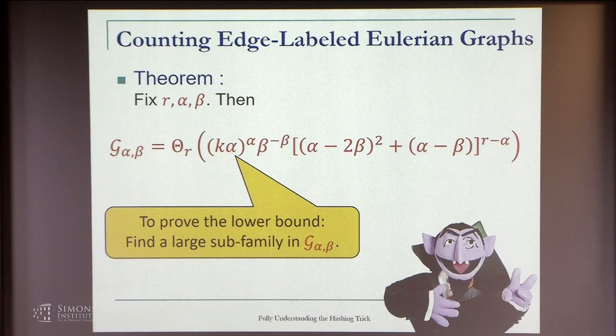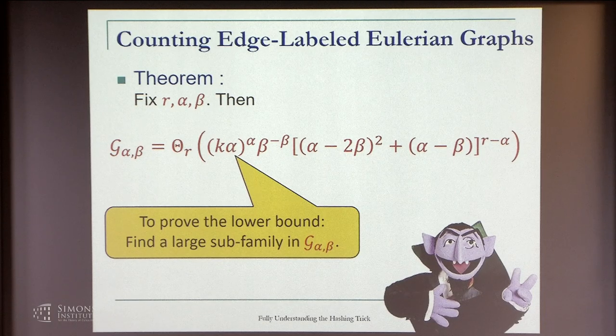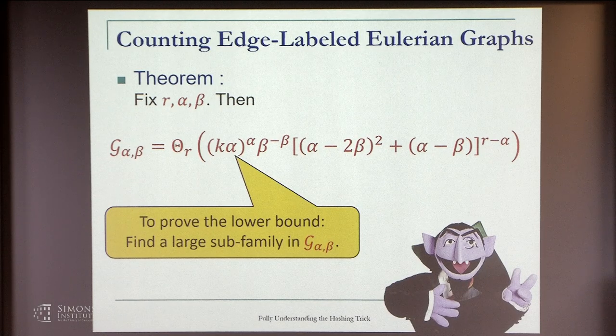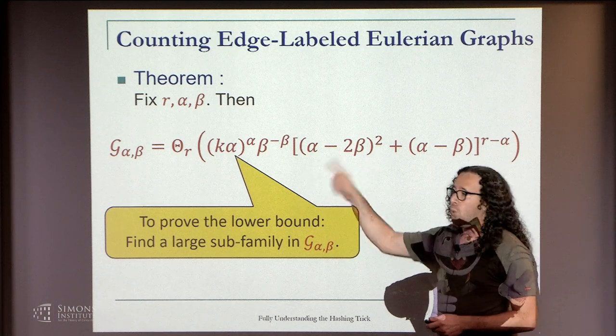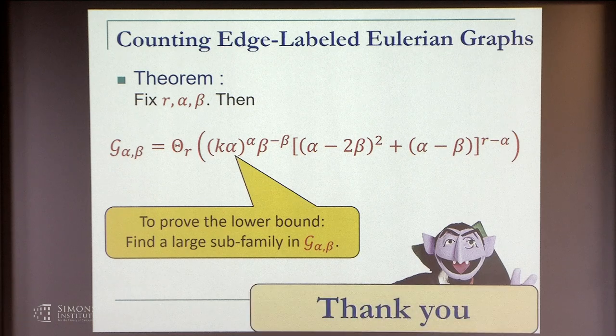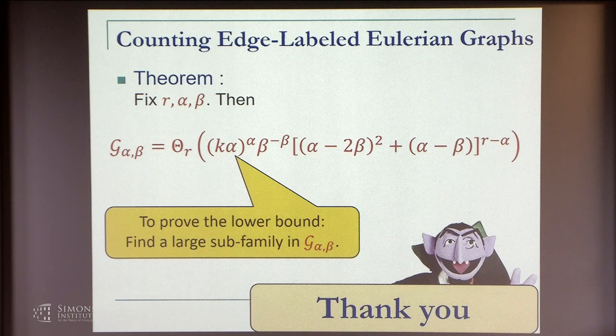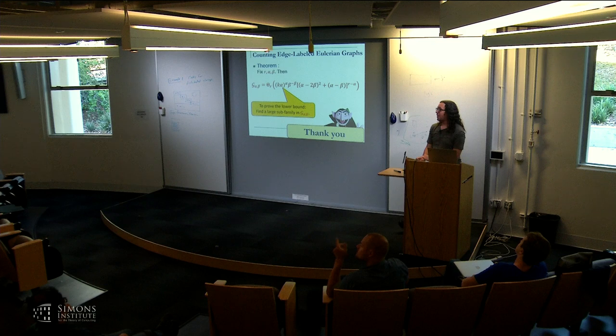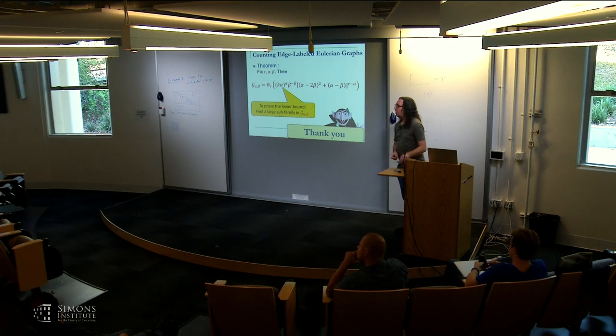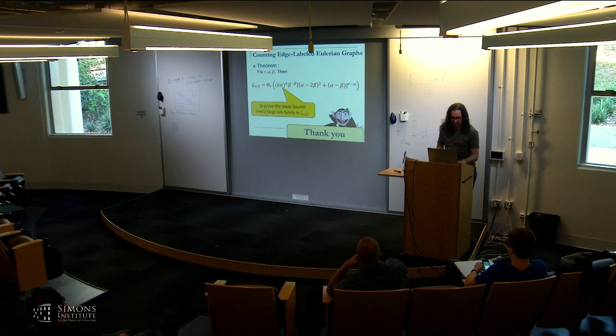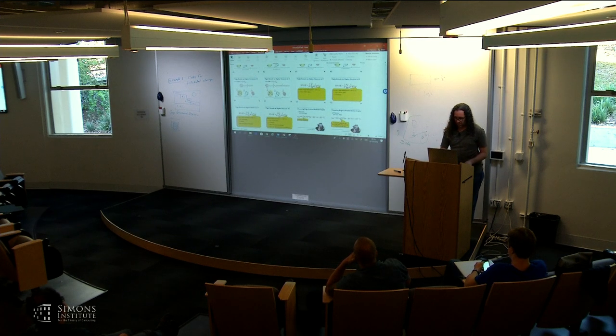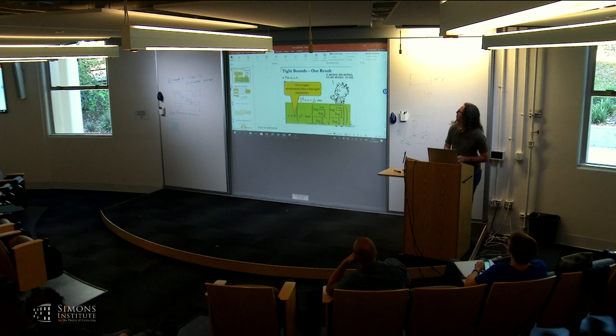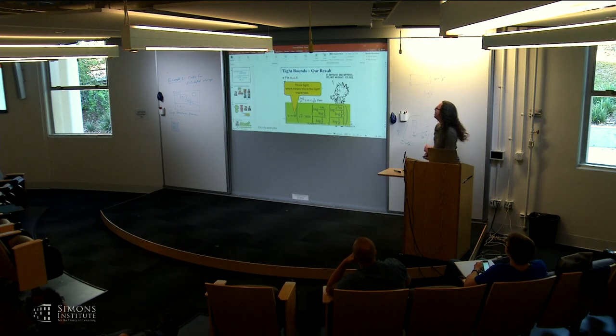For the lower bound, I won't get into this because I'm almost out of time. We basically construct a large subfamily of G_{alpha,beta} which is large enough to be this size up to 2^{-r/5}. I think I'll stop here. Could you repeat the slide with the statement of the result?